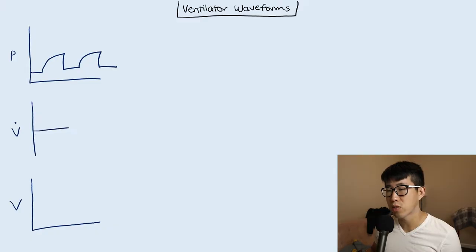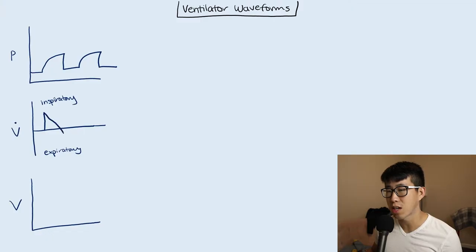For the flow waveform, you're going to have the inspiratory limb and then you're going to have the expiratory limb. What you're going to see is a sharp increase in the flow on inspiration, which gradually tapers off. And then you go to the expiratory limb, where you should see this kind of go back to baseline. So you start off positive and then you start having the expiration here.